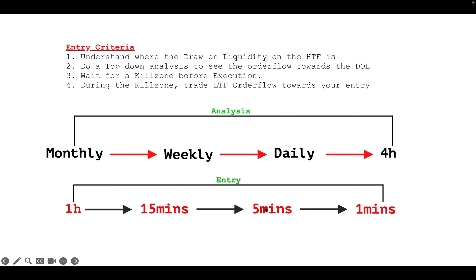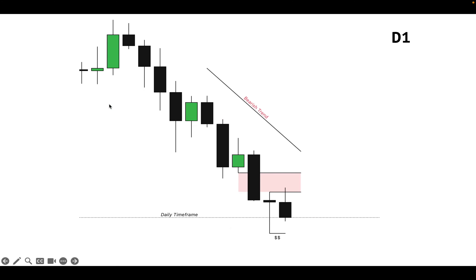Your draw liquidity on the daily timeframe — you can enter on the five-minute timeframe and trade towards it. A four-hour draw liquidity can use the 15-minute timeframe to find an entry. As long as you have your draw liquidity on the higher timeframe, you find your entry on any of these key zones — the one-hour, 15-minute, five-minute, or one-minute timeframes — to trade towards draw liquidity on the four-hour, daily, weekly, or monthly timeframe.